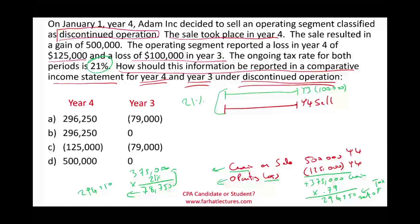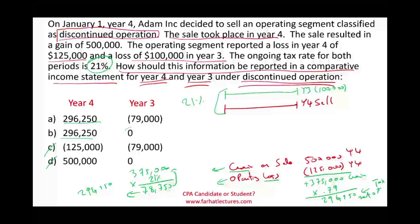At this point, I can zoom in on answers A and B because I have to report the amount net of tax at $296,250, so I can eliminate C and D. Now I'm looking at Year 3. The question is: should I report anything under discontinued operations, or report a $79,000 loss under discontinued operations?